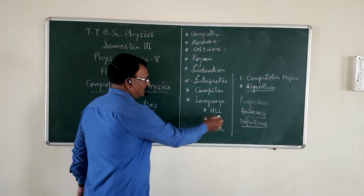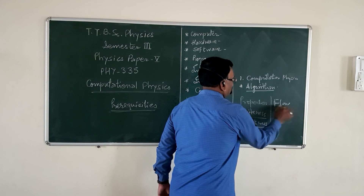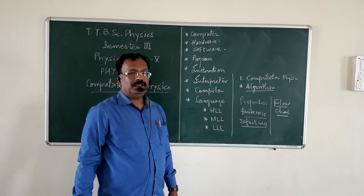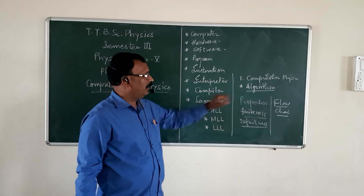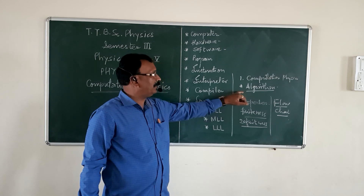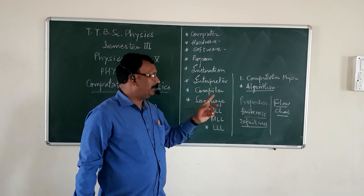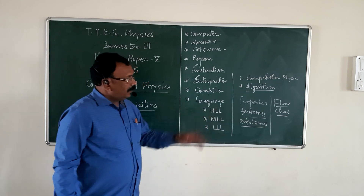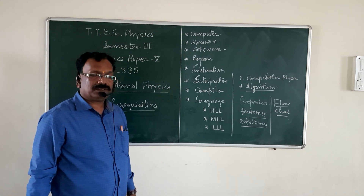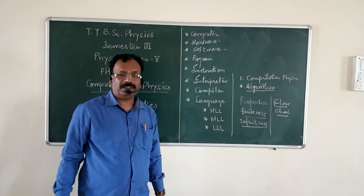Then there is the flowchart. A flowchart is a graphical or pictorial representation of an algorithm. This is a very important and proper definition of a flowchart. To construct a flowchart, there are special types of symbols, and these symbols will be explained in the next lecture. We shall stop here. Have a good day.